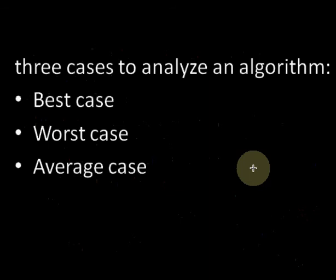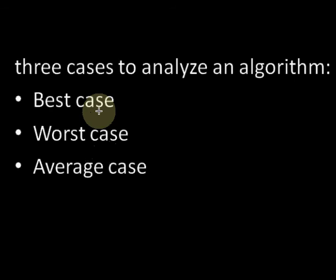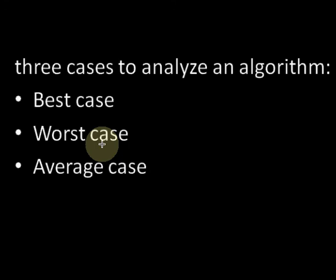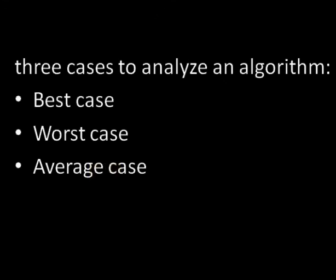Analyzing the time complexity and space complexity of an algorithm is done in three cases: best case, worst case, and average case. In the best case, for a particular scenario or input, the algorithm shows its best behavior, and the corresponding time complexity is called the best case time complexity. In the worst case, for some particular input, the algorithm shows its worst behavior. The average case is when the algorithm shows its average behavior.